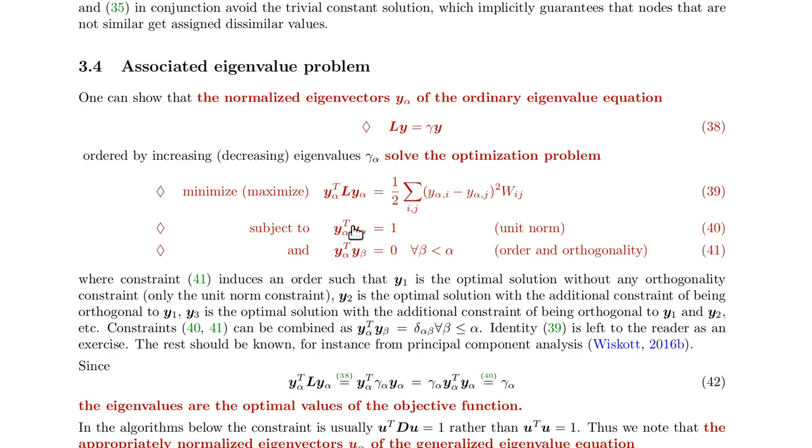Now, if we know that the eigenvectors are solutions to this optimization problem, we can also calculate the value of this function and that turns out, as you can easily see here. So, we consider the value of this one here, which is this one. Now, if y is an eigenvector, then this one here, according to this equation is simply eigenvalue times eigenvector and then we can take gamma to the front and knowing that this is normalized according to this function here, we see that this is simply gamma.